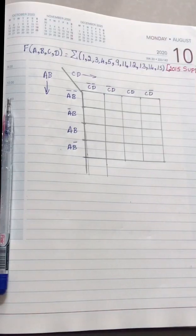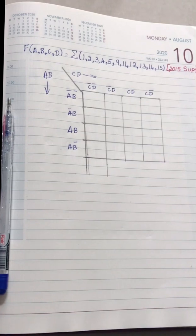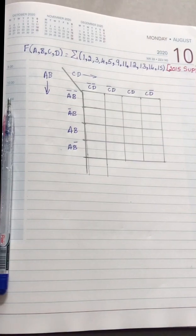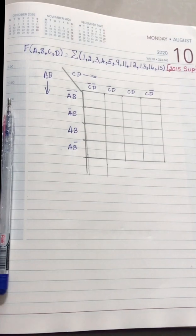Hello everyone, welcome to my channel. My name is Ashwini and today we are going to see the second PUC 2015 supplementary 27th question, which is a K-map problem. This is a five mark question and the first question in the fourth main. If you have not subscribed to my channel, please subscribe. The link for the 2015 question paper K-map solution is in the description box.